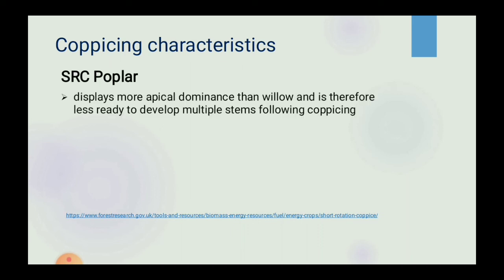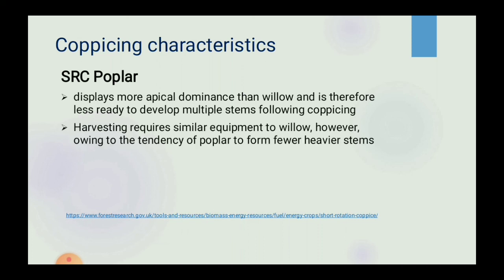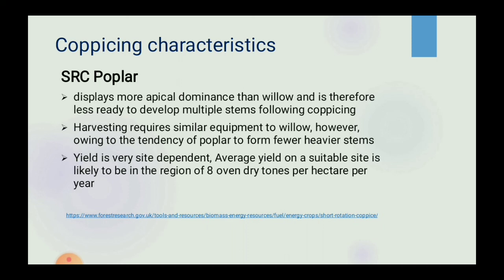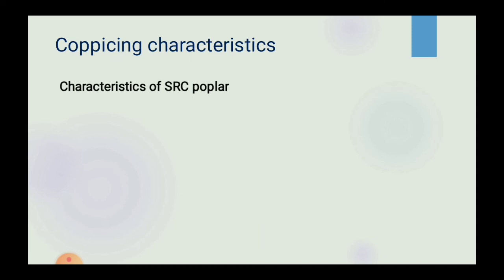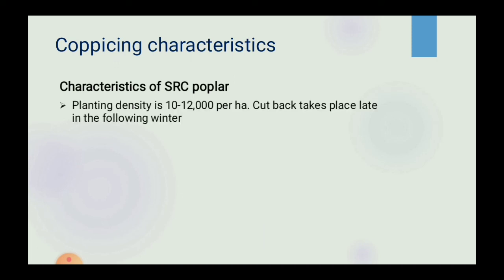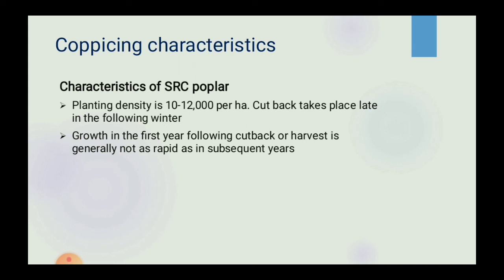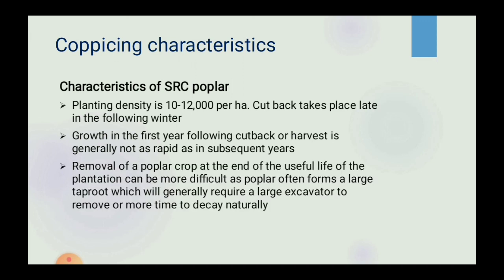SRC Poplar displays more apical dominance than willow and is therefore less ready to develop multiple stems following coppicing. Harvesting requires similar equipment to willow; however, owing to the tendency of poplar to form fewer, heavier stems, yield is very site dependent. Average yield on a suitable site is likely to be in the region of 8 oven-dry tons per hectare per year. Planting density is 10,000–12,000 per hectare. Cut back takes place late in the following winter. Growth in the first year following cut back is generally not as rapid as in subsequent years. Removal of a poplar crop at the end of the plantation's useful life can be more difficult, as poplar often forms a large taproot requiring a large excavator to remove or more time to decay naturally.